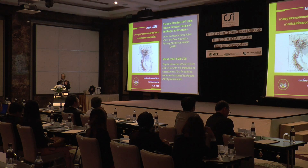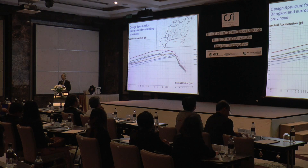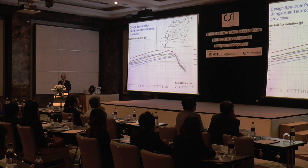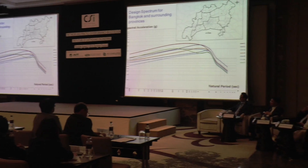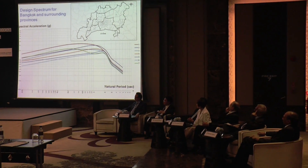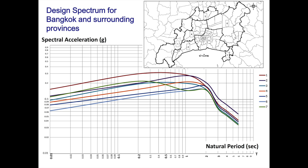However, there are some areas where we cannot use this procedure. This location is Bangkok. Bangkok is located in a special geological position — it sits on a huge, deep soft soil basin. This can amplify ground motion in a particular way. So in this area, we conducted a research study and developed a special type of design spectrum. We show that the ground motion here will be different from elsewhere — it will be a kind of long-period, long-duration ground motion, reflected by the response spectrum.